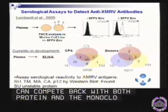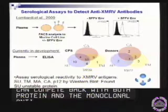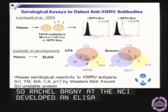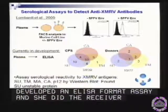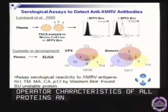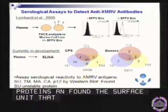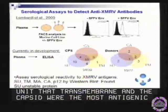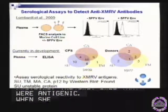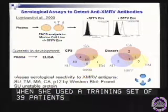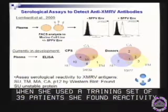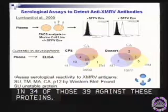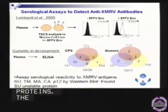Rachel Bagney at the NCI was developing an ELISA format assay, and she did the receiver-operator characteristics of all the proteins, and found that the surface unit, the transmembrane, and the capsid were really the most antigenic proteins — in fact, the only ones that were really antigenic. When she used a training set of 39 of our patients, she found reactivity in 34 of those 39 against these proteins. The major antigenic site was the surface unit, as suggested by our original study.